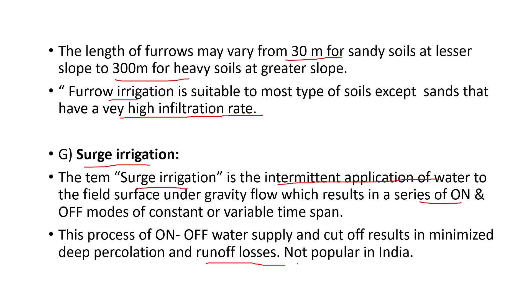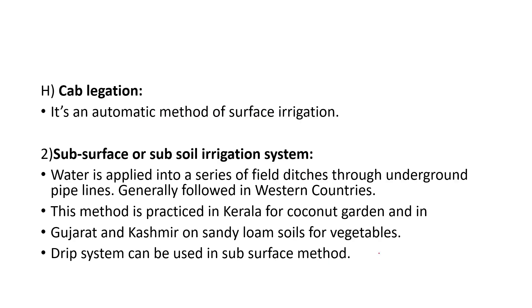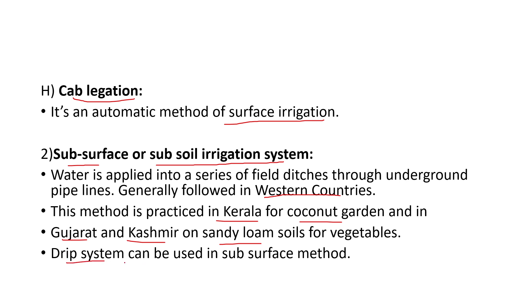Surge irrigation is not popular in India. The last surface method is cab lubrication, which is an automatic method of surface irrigation. The second type of irrigation system is subsurface or subsoil irrigation, where water is applied into field ditches through underground pipelines, generally followed in western countries. It is practiced in Kerala for coconut gardens and in Gujarat and Kashmir on sandy loam soils for vegetables. Drip systems can also be used in subsurface methods.